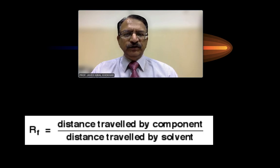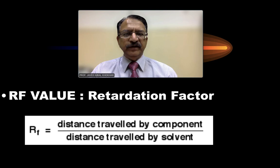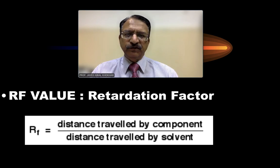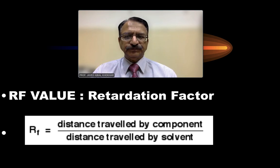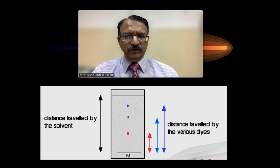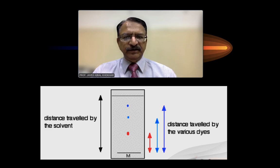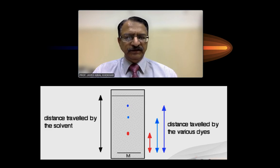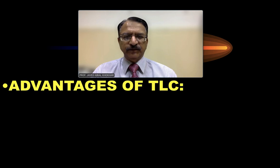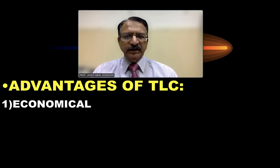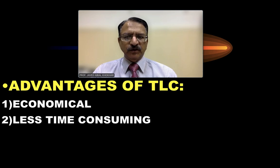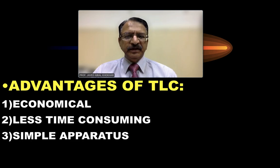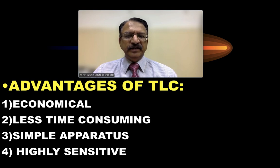The RF value is the distance travelled by the component divided by the distance travelled by the solvent, and this RF value will be different for different ingredients. The advantages of thin layer chromatography are that it is economical, consumes less time, uses simple apparatus, and is highly sensitive.